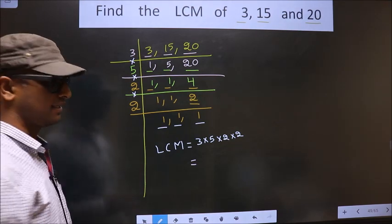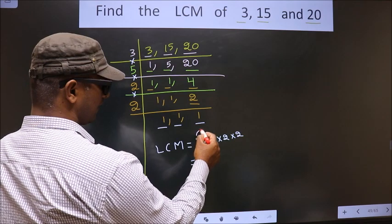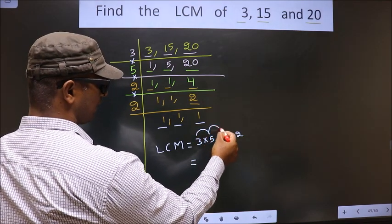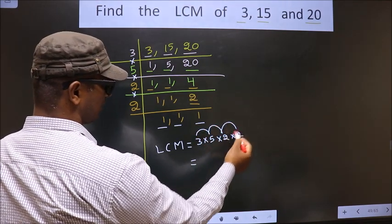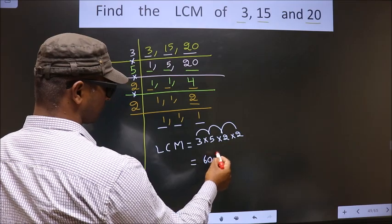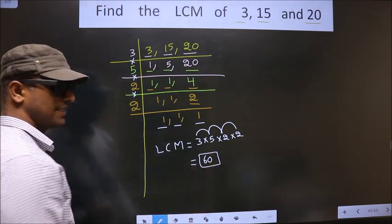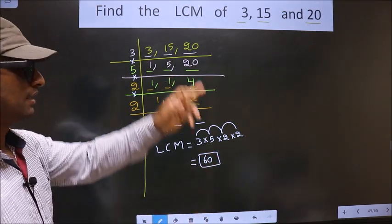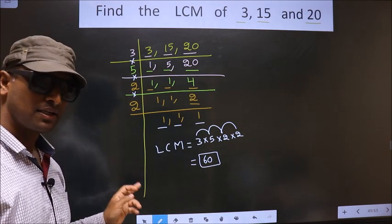So, let us multiply. That is 3 into 5, 15, 15 into 2, 30, 30 into 2, 60. So, this is our LCM. Am I clear?